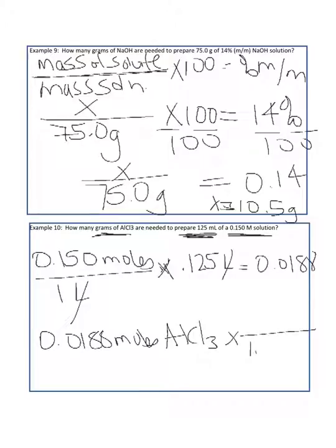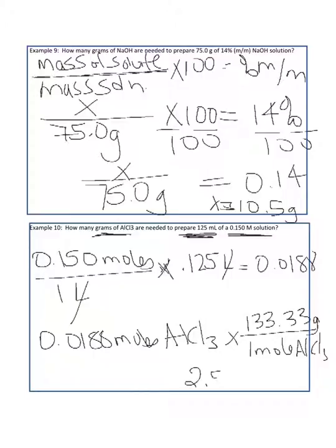From the periodic table, aluminum weighs 26.98 and 3 chlorines each weigh 35.45, so 35.45 times 3 plus 26.98 equals 133.33 grams per mole. Taking 0.0188 moles times 133.33 g/mol gives us a total of 2.51 grams of AlCl3.